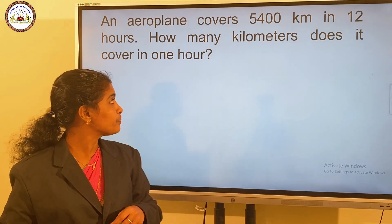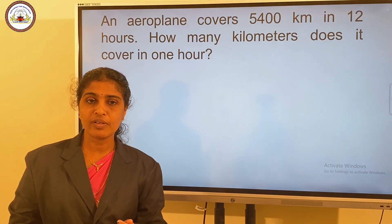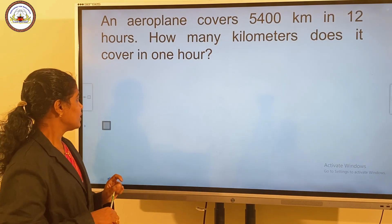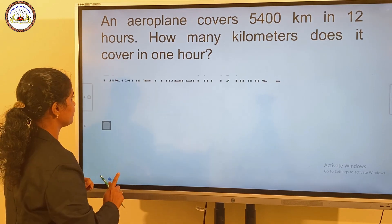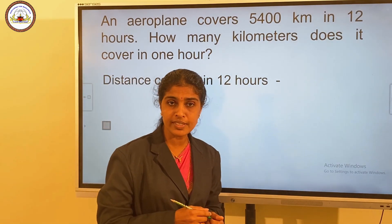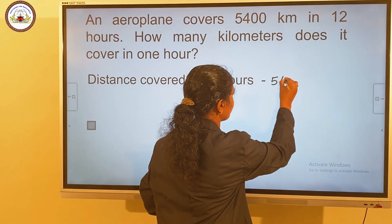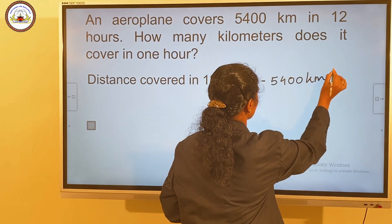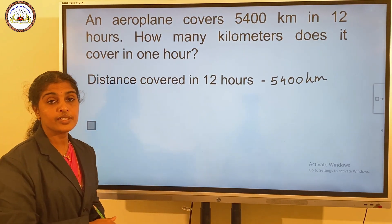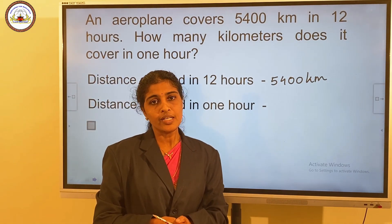Now we have a word problem. An airplane covers 5,400 kilometers in 12 hours. How many kilometers does it cover in 1 hour? The first step: distance covered in 12 hours is 5,400 kilometers. Our next step: distance covered in 1 hour is equal to 5,400 divided by 12.